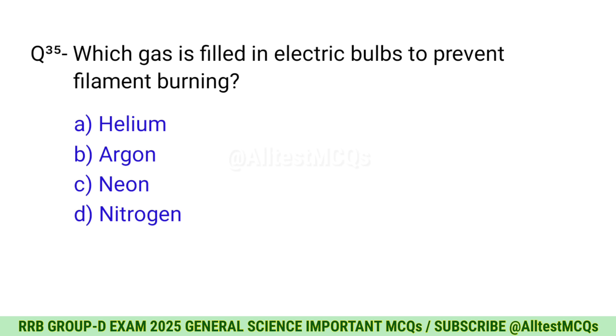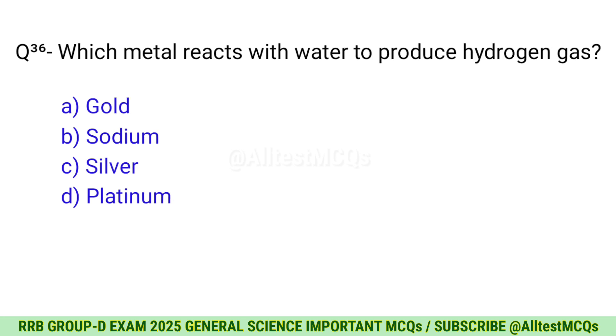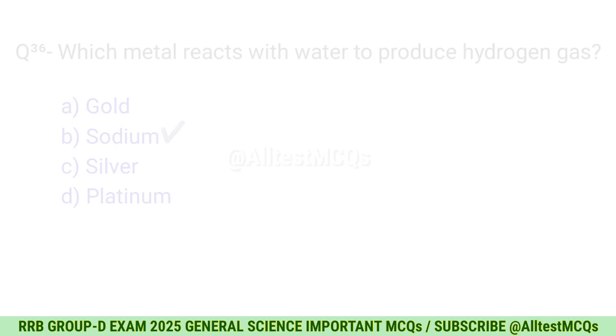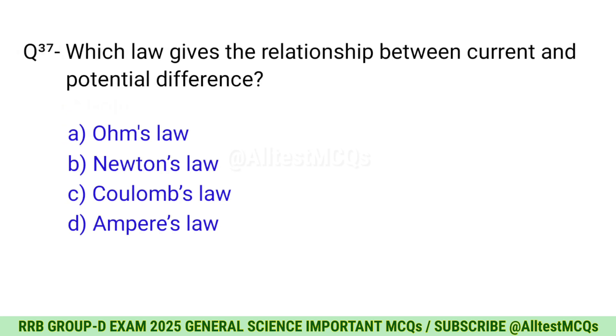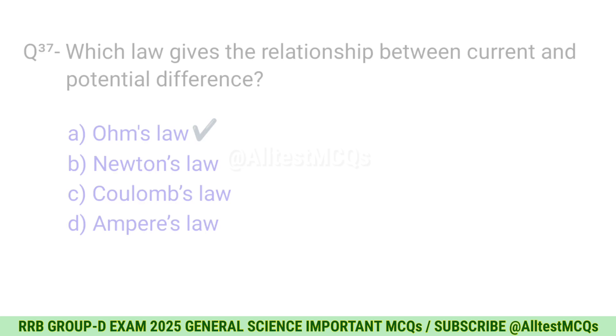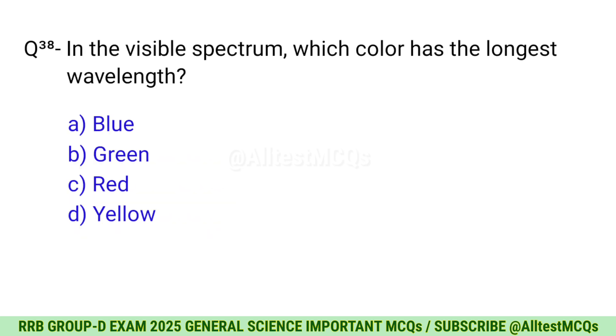Question 35: Which gas is filled in electric bulbs to prevent filament burning? The right option is B, Argon. Question 36: Which metal reacts with water to produce hydrogen gas? The right option is B, Sodium. Question 37: Which law gives the relationship between current and potential difference? The right option is A, Ohm's law.